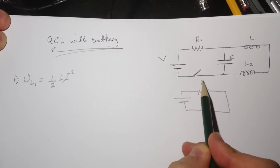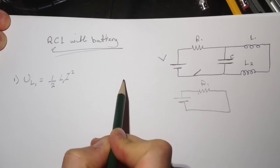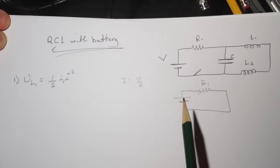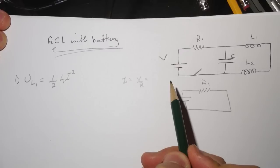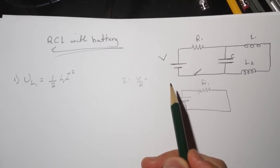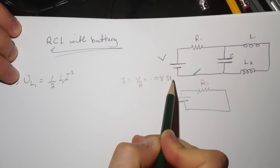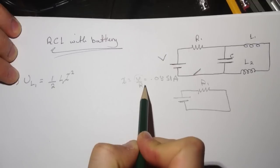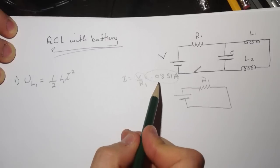To find the current in this, we just do I equals V over R. And I got that to be the numbers—I got 0.0851 ampere. This voltage to the battery, this is R1, this resistor.